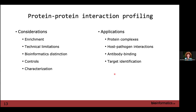Protein-protein interaction profiling is another concept from module one. Enrichment is one of the considerations — you can do this with a bait tagged to a resin where one protein is tagged and you wash other proteins over it to identify interacting partners, or you may want to do it with the BioID approach for within-cell interactions. Technical limitations include needing a tag on your protein. There are also higher-throughput interaction methods available.